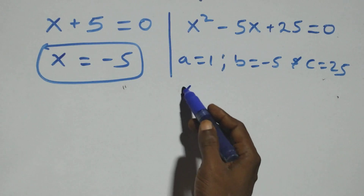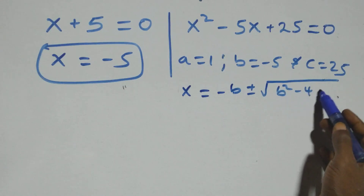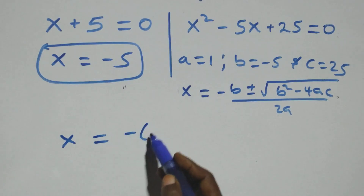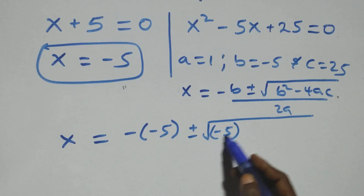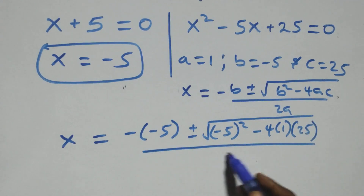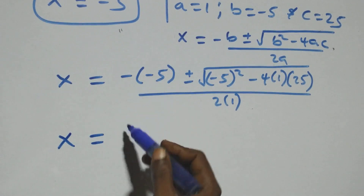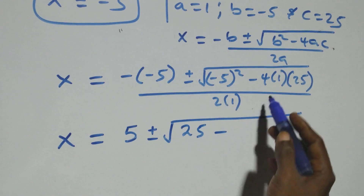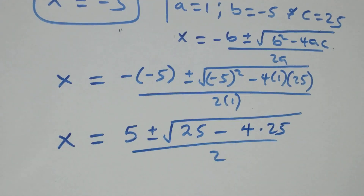Applying the quadratic formula x equals (minus b plus or minus square root of b squared minus 4ac) all over 2a, we substitute: x equals (minus(minus 5) plus or minus square root of (minus 5) squared minus 4 times 1 times 25) all over 2 times 1. Simplifying, minus times minus is plus, giving us 5 plus or minus square root of 25 minus 4 times 25, all over 2.